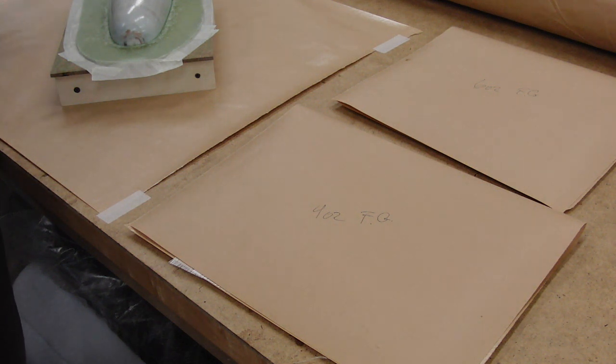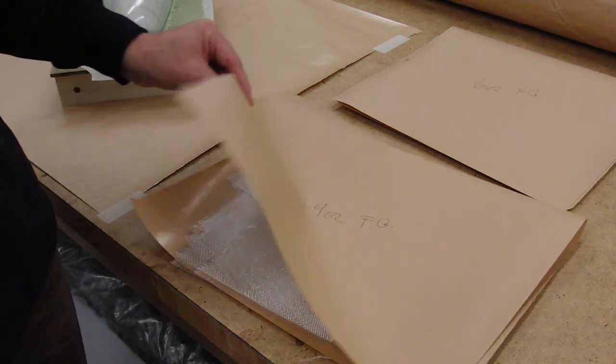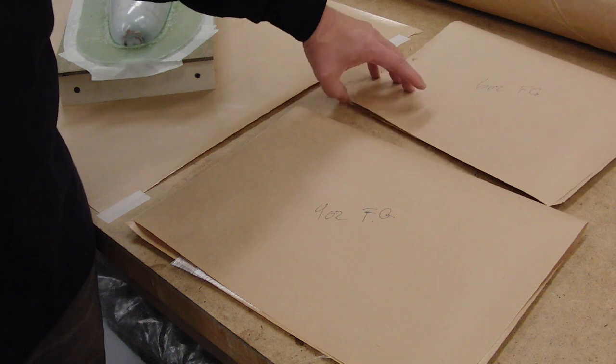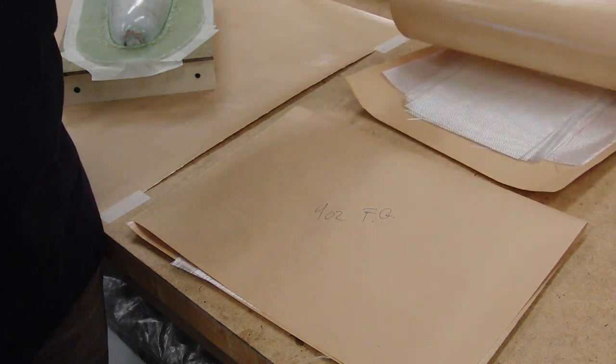Once again, exact same thing as the first half. Four ounce cloth to start, and then the bulk with six ounce cloth.